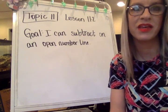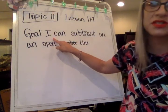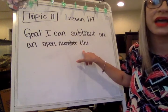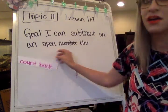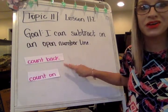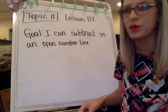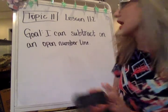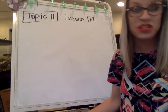Hi, we're working on Topic 11, Lesson 11.2. The goal is to be able to subtract on an open number line. We're going to be doing that by using the strategy of counting back and the strategy of counting on. You'll have an option to choose either one of those ways. You already have some background knowledge on how to do this. The only difference is now we're going to be doing it with three-digit numbers.